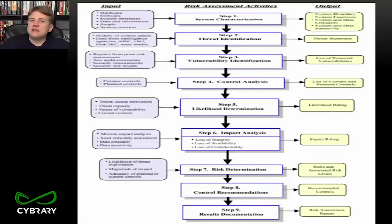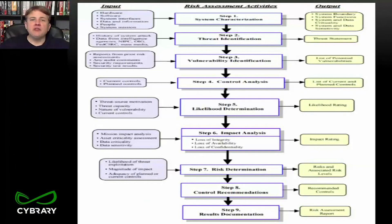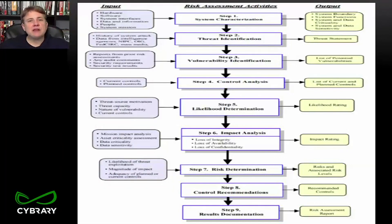All of this ties together, whether you're following the framework from OCTAVE, FRAP, NIST, or any other organization that has a say in risk management. Even though everyone says it perhaps a slightly different way, the premise is all the same: identify your assets, evaluate them, look at your threats and vulnerabilities, figure out your potential for loss to guide your mitigation strategy, implement your mitigation strategy, test it, and document it.